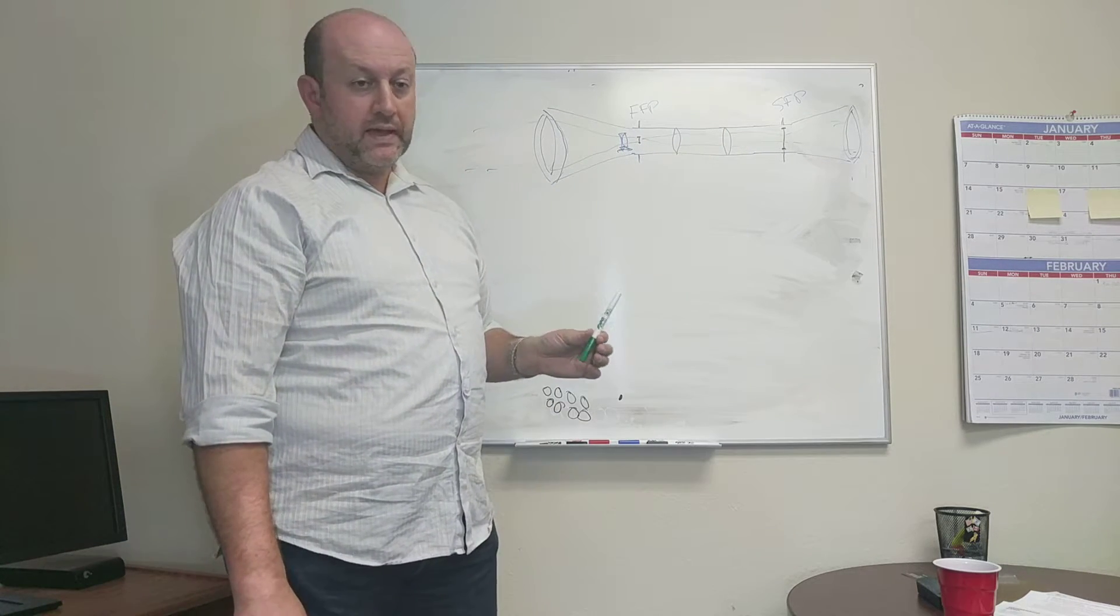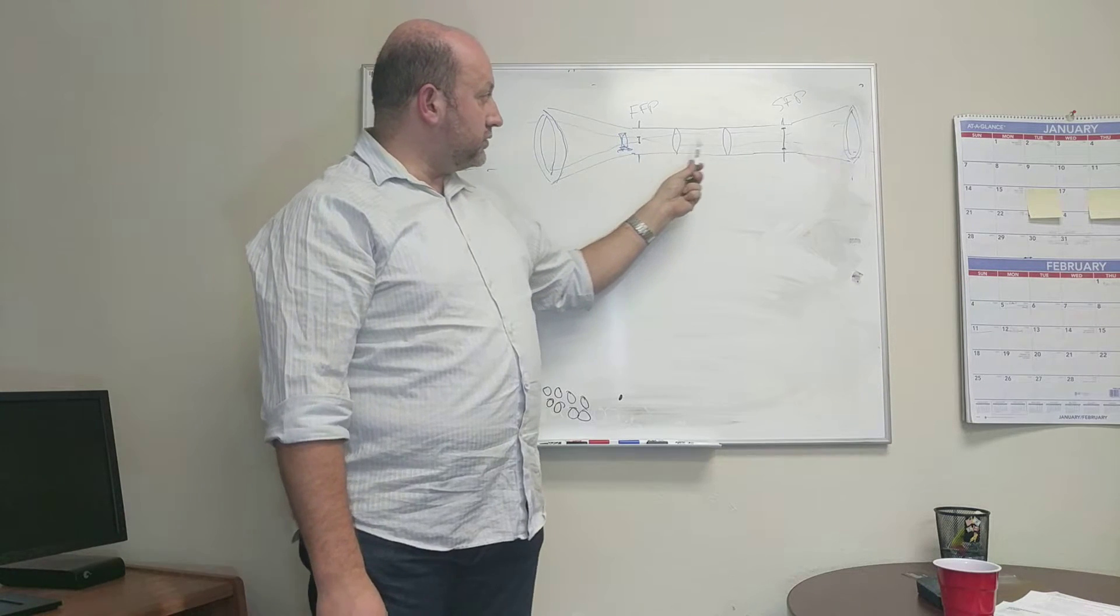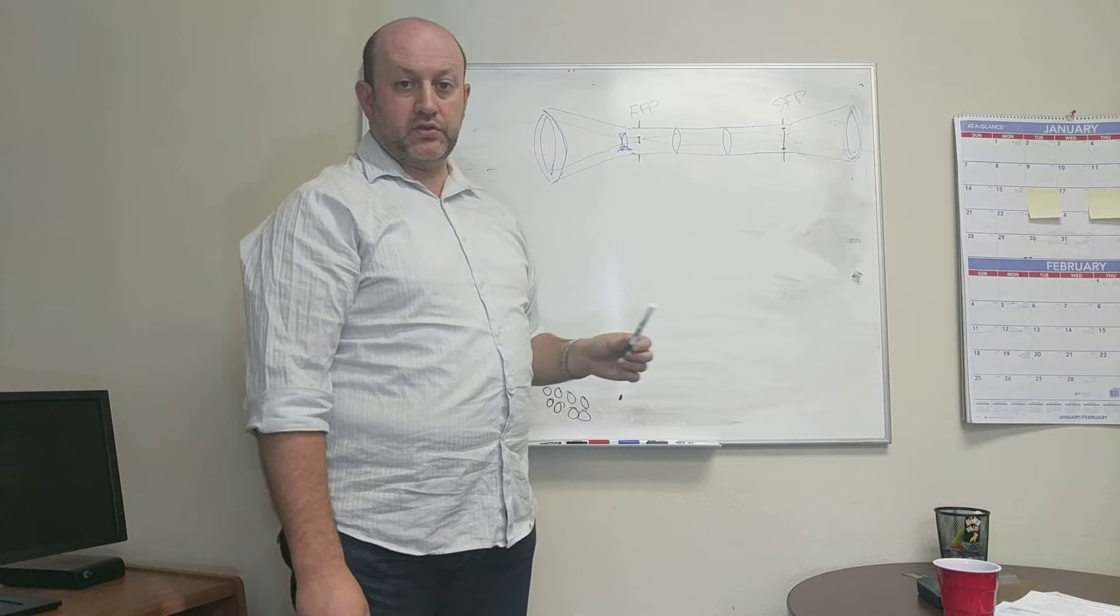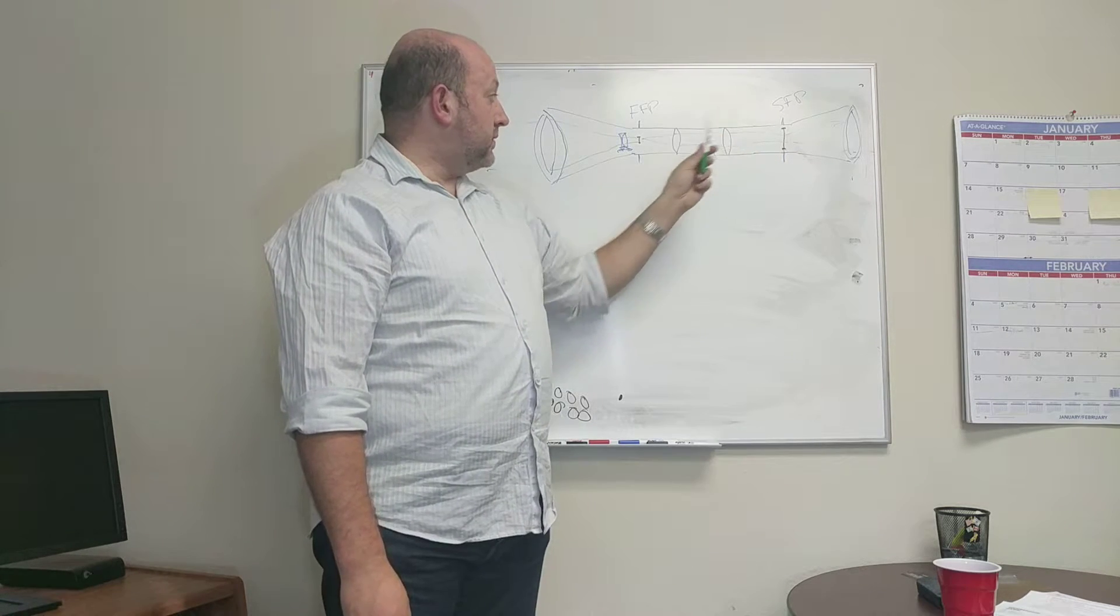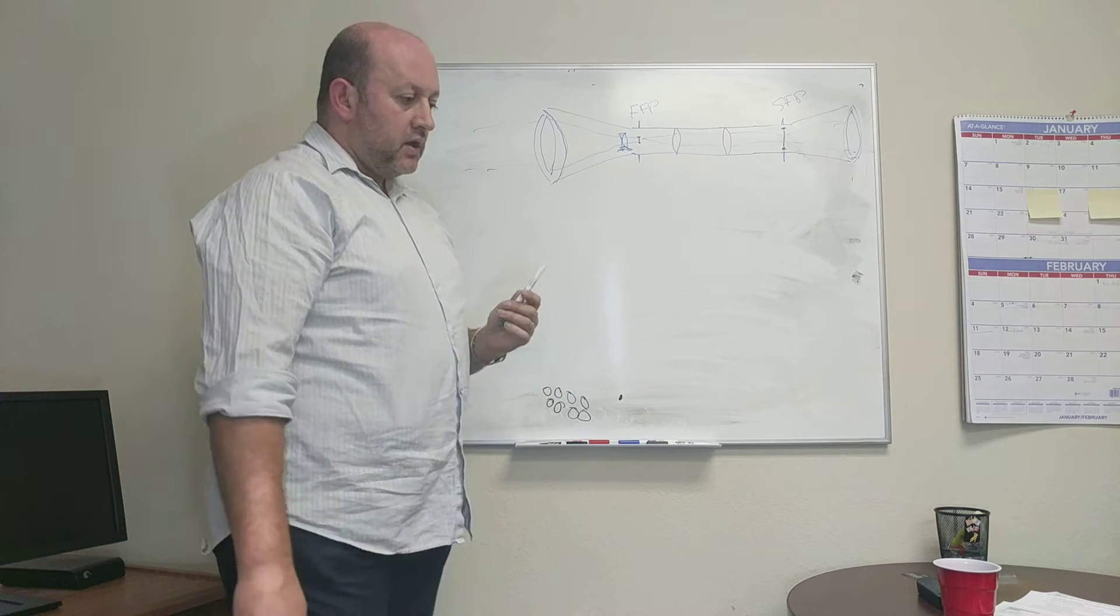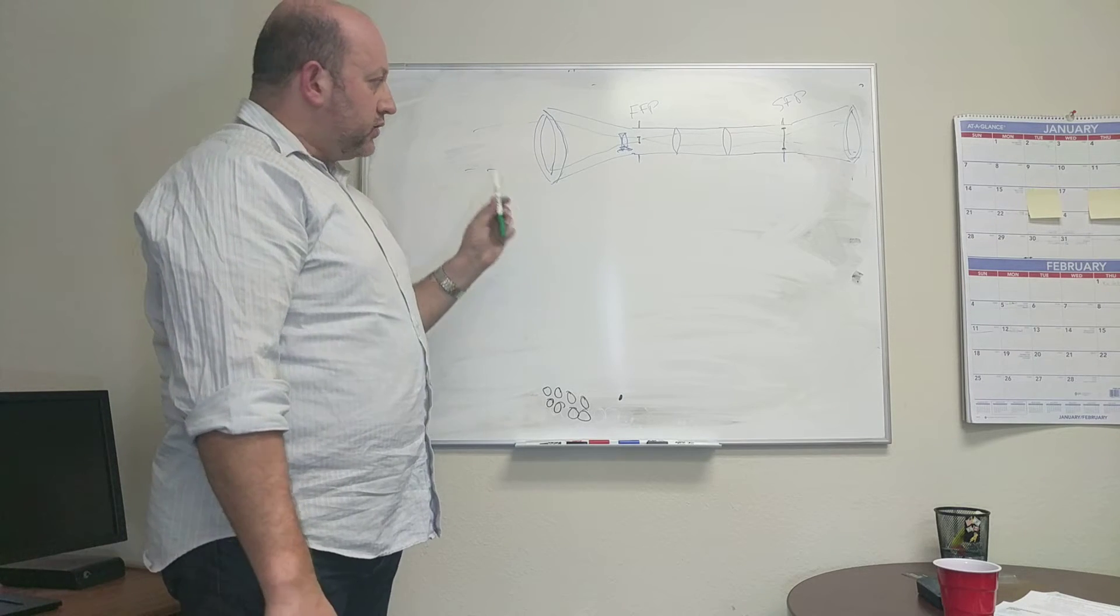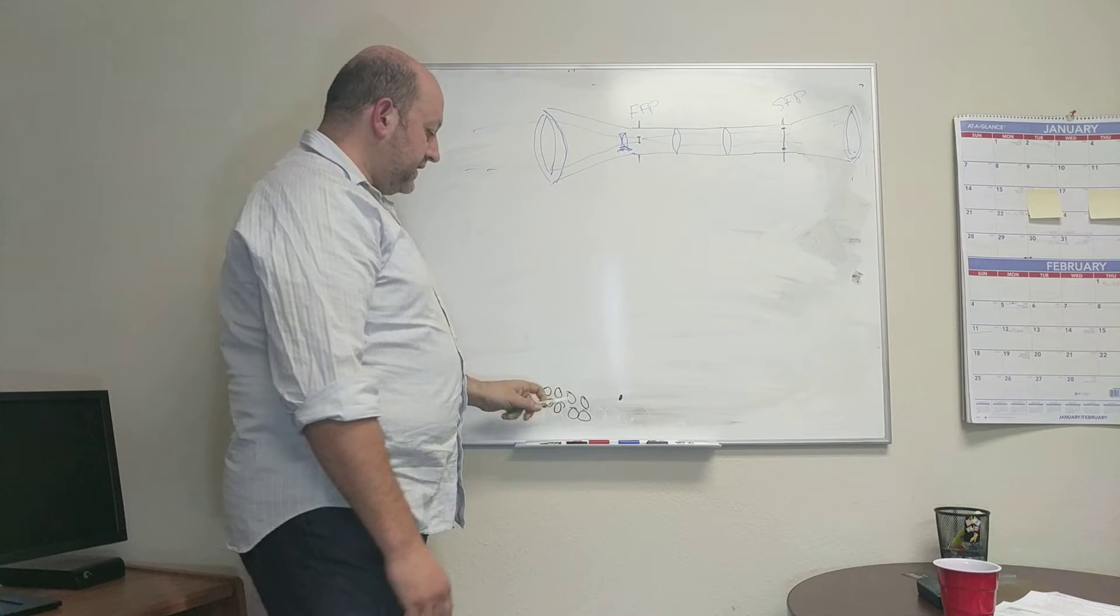The optical system in the middle—the erector system—basically all it does is re-image the reticle from front focal plane onto the second focal plane and does some magnification. For example, the image is larger at the second focal plane than in the front focal plane.